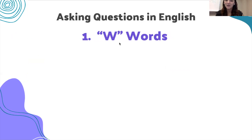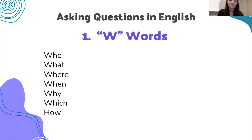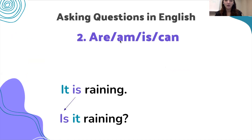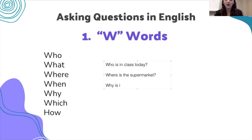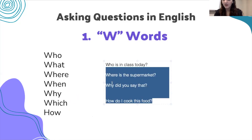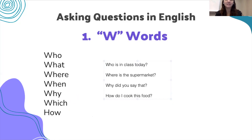For our W-words — who, what, where, when, why, which, how — we can think of some examples: 'who is in class today?', 'where is the supermarket?', 'why did you say that?', 'how do I cook this food?' These will have longer answers. 'Who is in class?', 'where is the supermarket?', 'why did you say that?', 'how do I cook this food?' — they are going to be longer answers.